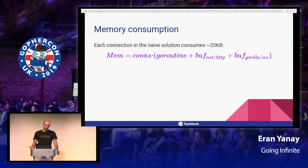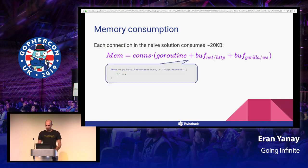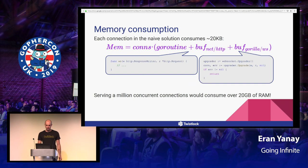I want to formulate this to better understand what my memory usage looks like. Every connection basically requires a goroutine. It also has buffers allocated from the net/http package and a buffer allocated from the Gorilla WebSocket library — for every incoming connection, the WebSocket handler allocates the first two buffers and the upgrade mechanism allocates the third one. This means that serving a million concurrent connections would eventually consume about 20 gigabytes of RAM.